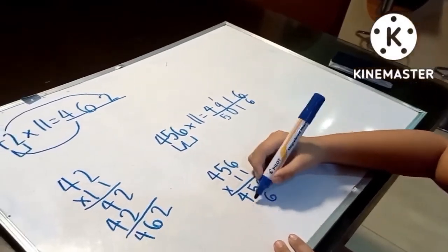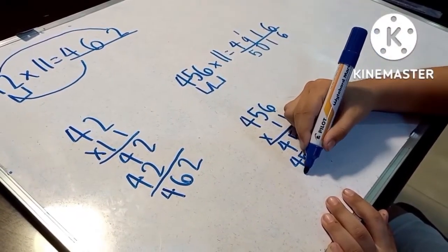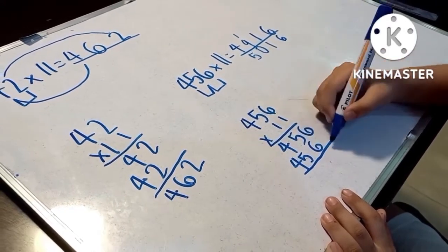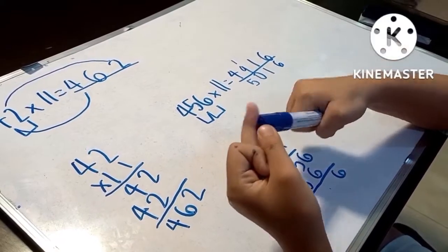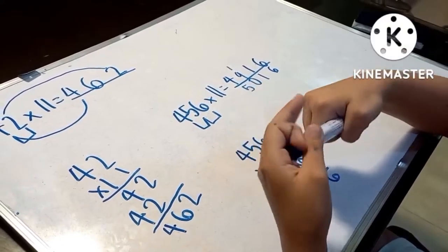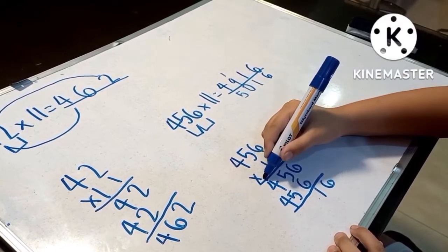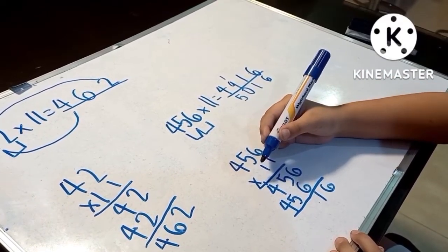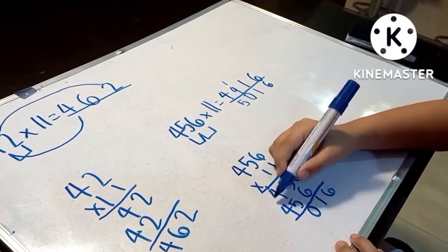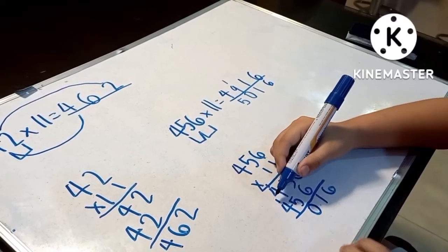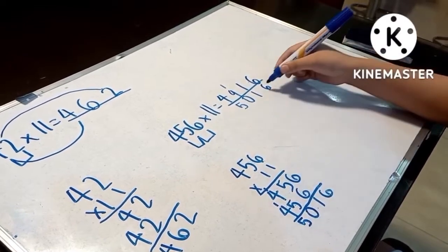So, five, six, seven, eight, nine, ten, eleven. Then carry one. Five plus five, ten, zero, carry one. Four plus one, five. Our answer is correct.